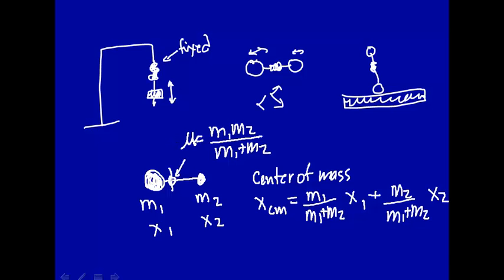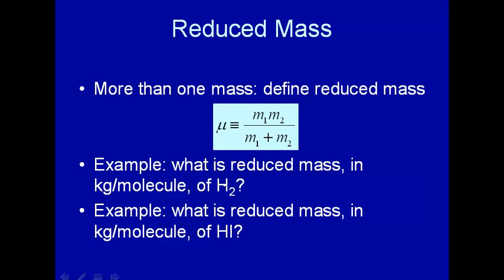So pretend that these two masses are a reduced mass right at the center of mass. The particle at the center of mass with this reduced mass will behave just like a harmonic oscillator. Let's do a couple examples to see if we understand that. It's the product of masses divided by the sum of the masses. Let's look at the reduced mass in kg per molecule of H2.